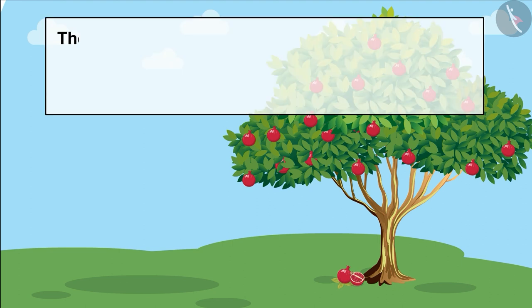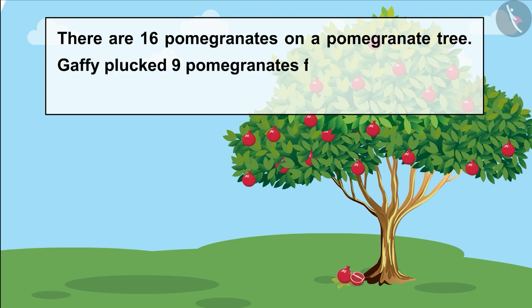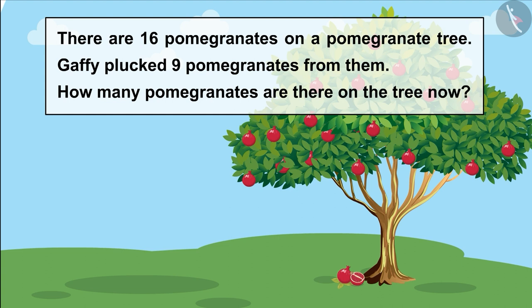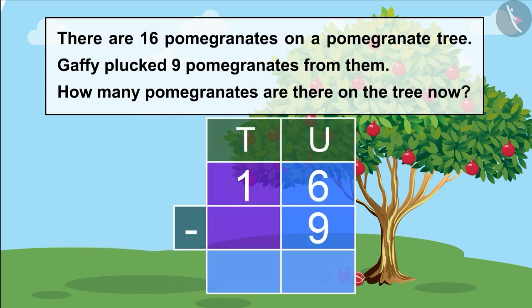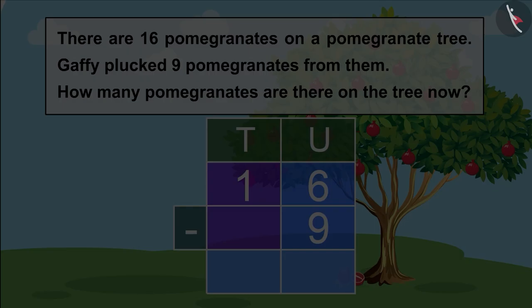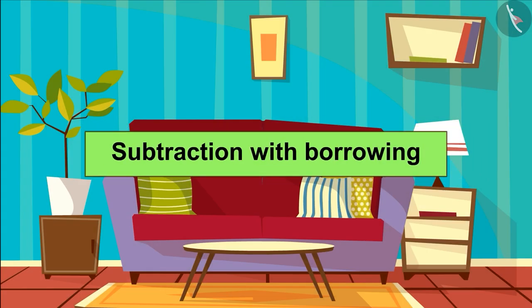Now it's your turn, children, to solve this question. There are 16 pomegranates on a pomegranate tree. Gaffey plucked 9 pomegranates from them. How many pomegranates are there on the tree now? Solve this question and share your answer with your friends and family. Children, in this video we learned to do subtraction with borrowing till 20.